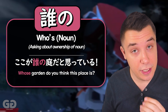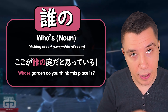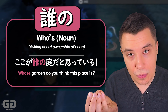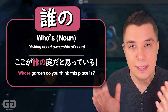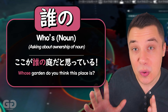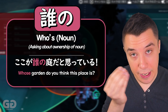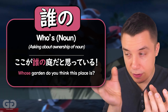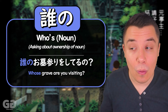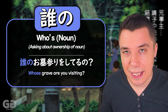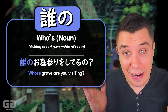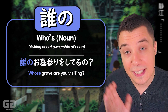Next we have a bit of an extension from the の particle that we learned in the previous lesson. We know that の is used with possession, and we can use it with the word だれ — 'who' — to show 'whose something.' だれの noun — 'whose Pikachu?' だれのピカチュウ. Or like seen here — 'whose garden?' だれのにわ. And like seen here in Bokuの夏休み — だれのお墓参りをしているの? — 'Whose grave are you visiting?'